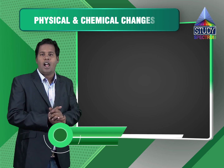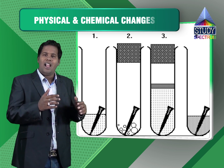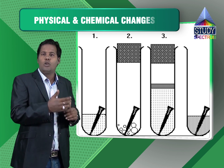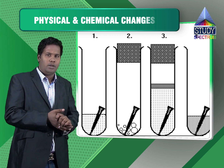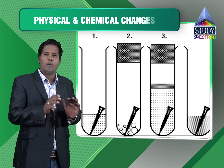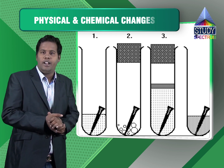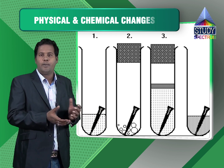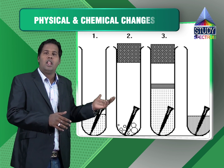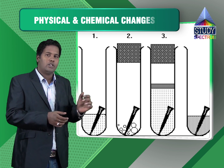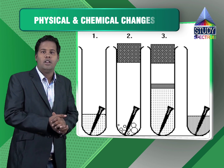Now if you drop some pieces of iron — iron nails — into it, then since iron is highly reactive or more reactive than copper, it will displace copper from copper sulfate solution. This means iron is displacing copper from its own solution to form iron sulfate FeSO4, with copper being deposited at the bottom. Iron has been able to displace copper only because iron is more reactive than copper.